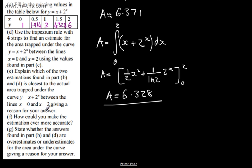In part F, it asks how could you make the estimation even more accurate. The answer is to increase the number of trapeziums, or equivalently, increase the number of x values in the table and the corresponding y values.